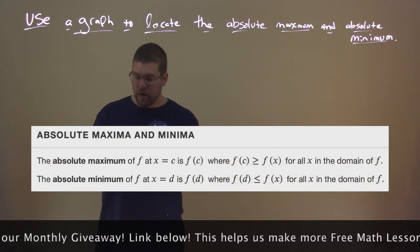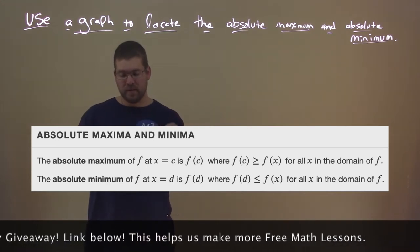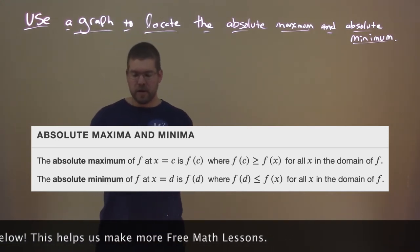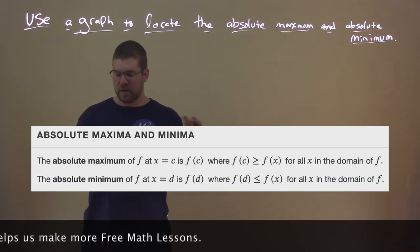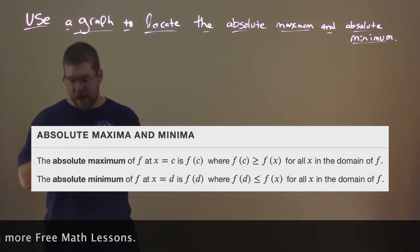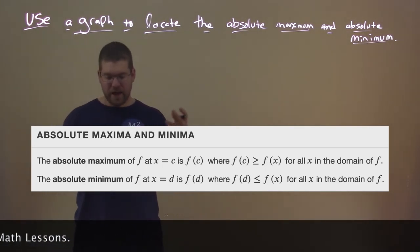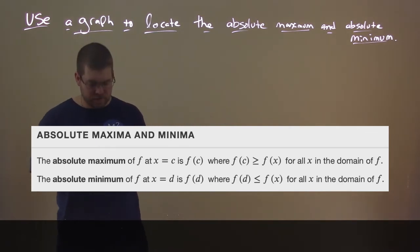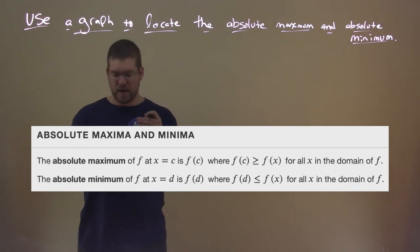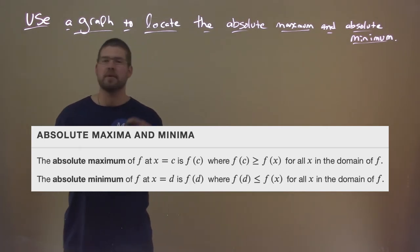The absolute maximum of f at x equals c is f of c, where f of c is greater than or equal to f of x for all x in the domain of f. The absolute minimum of f at x equals d is f of d, where f of d is less than or equal to f of x for all x in the domain of f. Big definition.